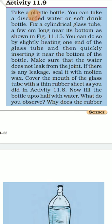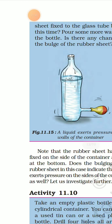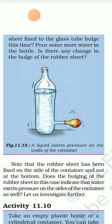What do you observe? Does the rubber sheet fixed to the glass tube bulge this time? Pour some more water in the bottle. Is there any change in the bulge of the rubber sheet? A liquid exerts pressure on the walls of the container. Note that the rubber sheet has been fixed on the side of the container and not at the bottom. The bulging of the rubber sheet indicates that water exerts pressure on the sides of the container as well.